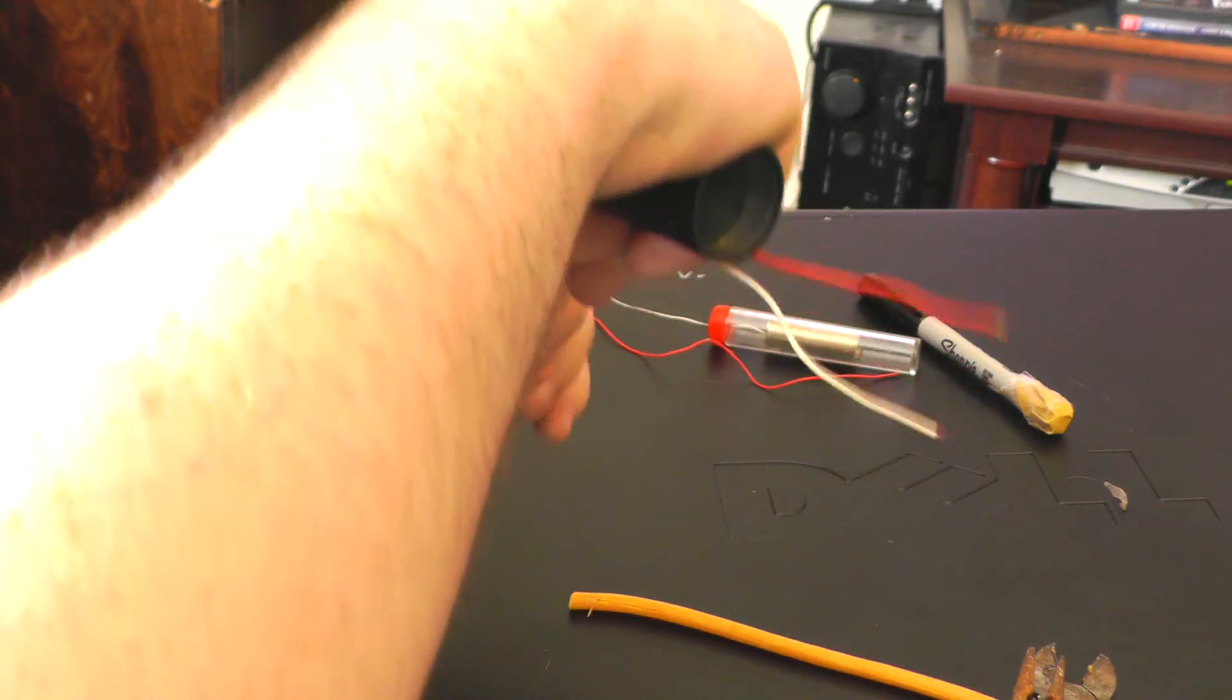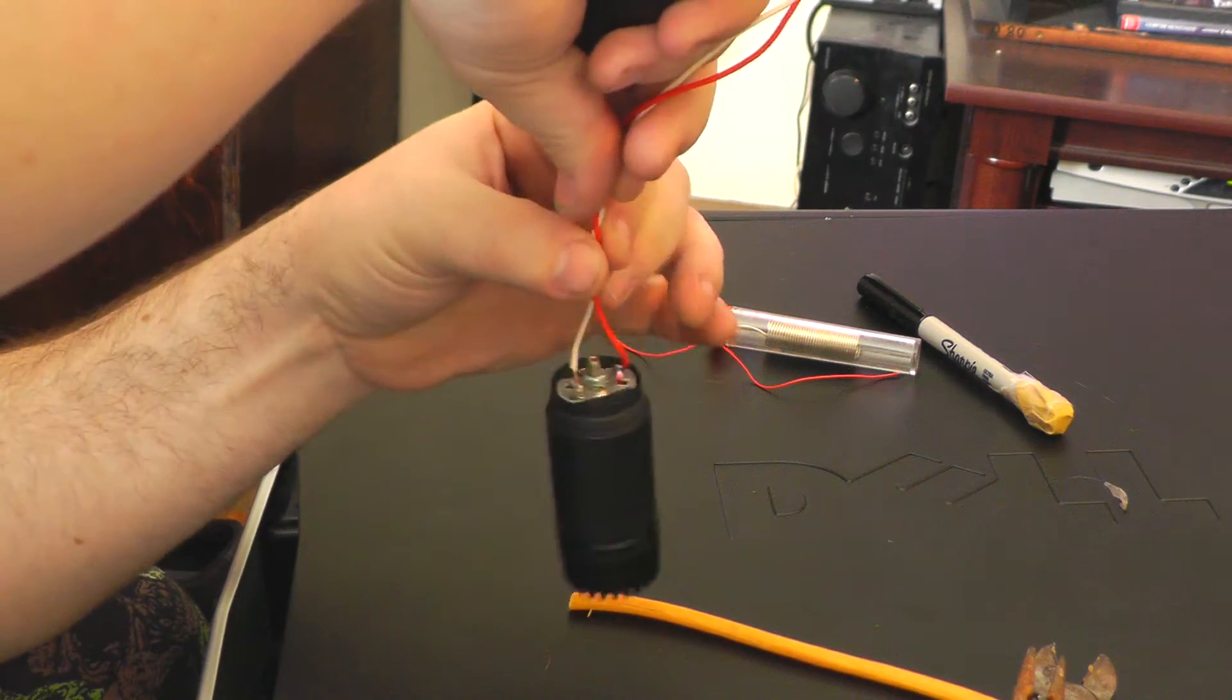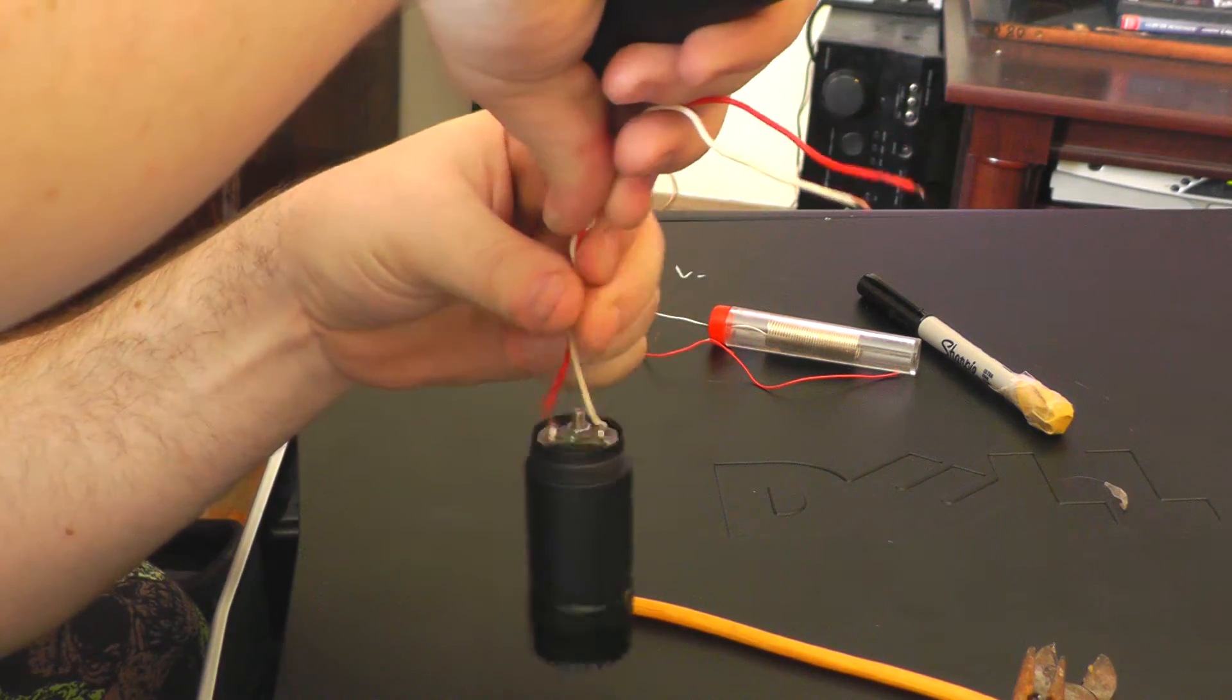And it's very important, you need to twist your cables together because that helps to stop hum, any excess hum within the microphone.